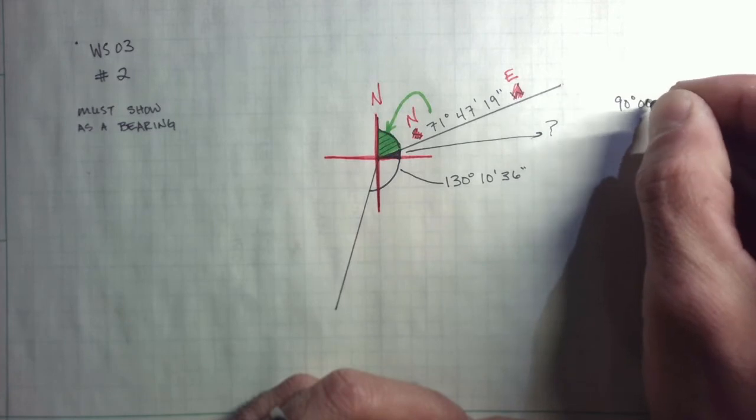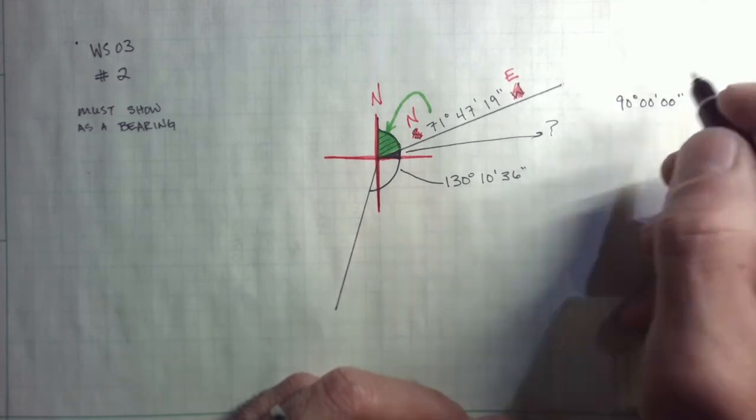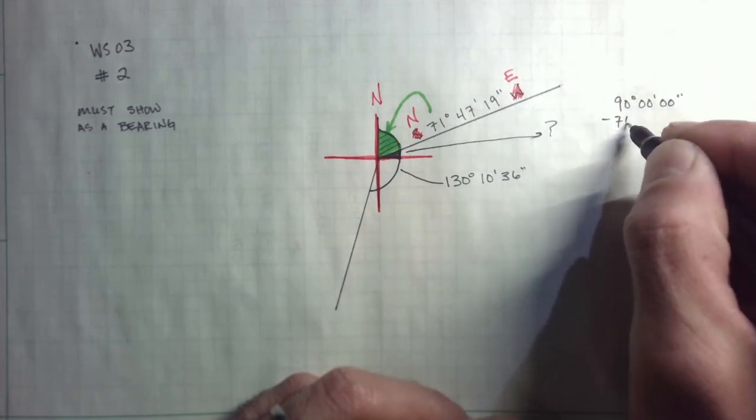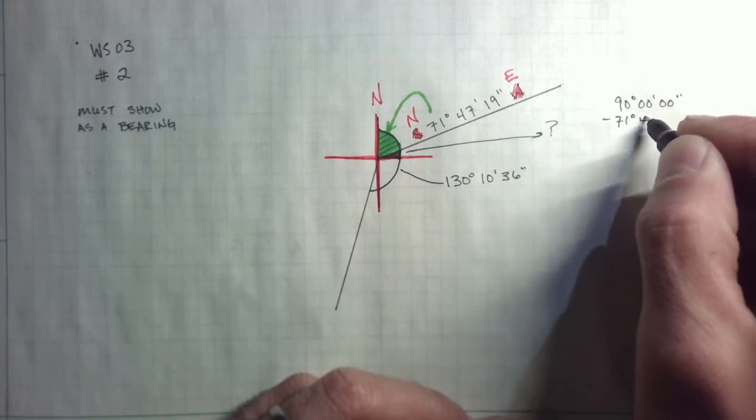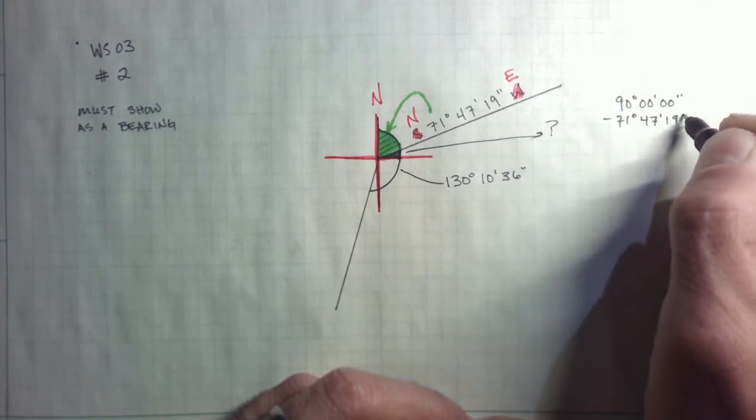So what is that slice of the pie? Well, that's 90 degrees minus that 71 degree bearing angle. So 90 degrees, 0 minutes, 0 seconds, minus that 71 degrees, 47 minutes, 19 seconds.